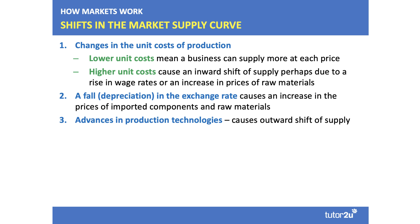Here are some of the key conditions of supply. The most important factor is a change in the unit cost of production. If the unit cost goes down, businesses can supply more at each price level. Conversely, if unit costs go up — perhaps because of an increase in the wage rate or higher raw material prices — then there's a fall in supply; you can't supply as much at each price.